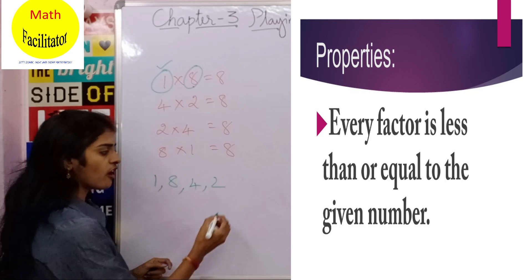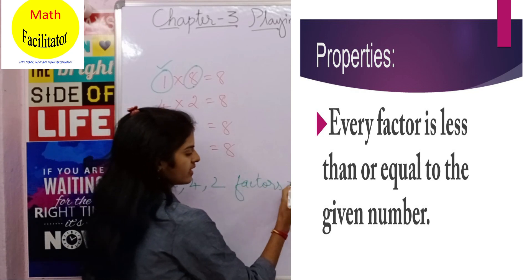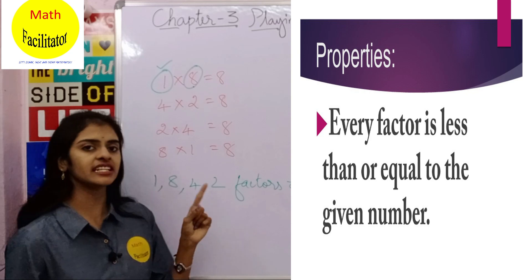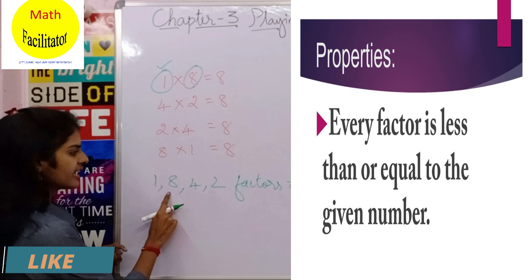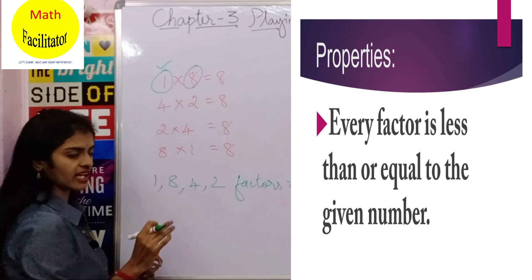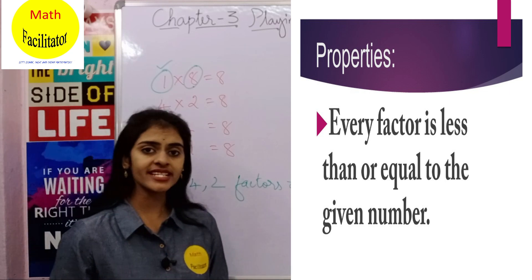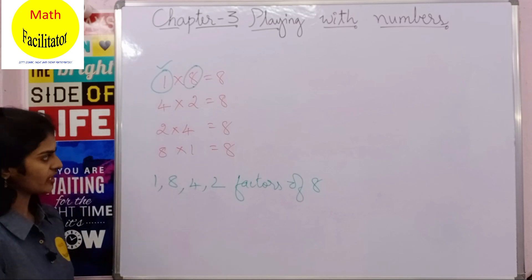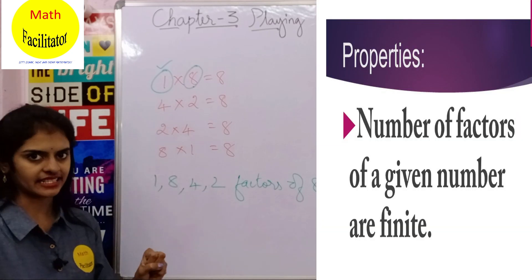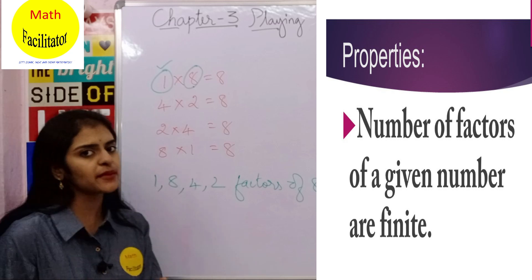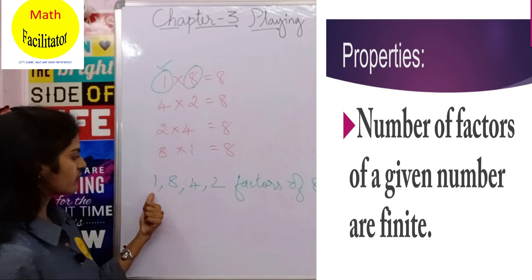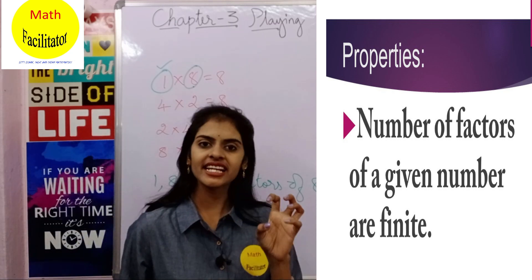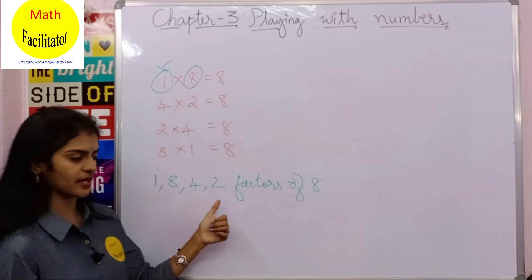The fourth property: a factor of a number is always less than or equal to that particular number. The factors of 8 are 1, 2, 4, and 8. Here 8 is equal to 8, and 4, 2, 1 are all less than 8. The fifth property: factors are finite — there is a limit to the number of factors. For 8, there are 4 factors, and you can count them.